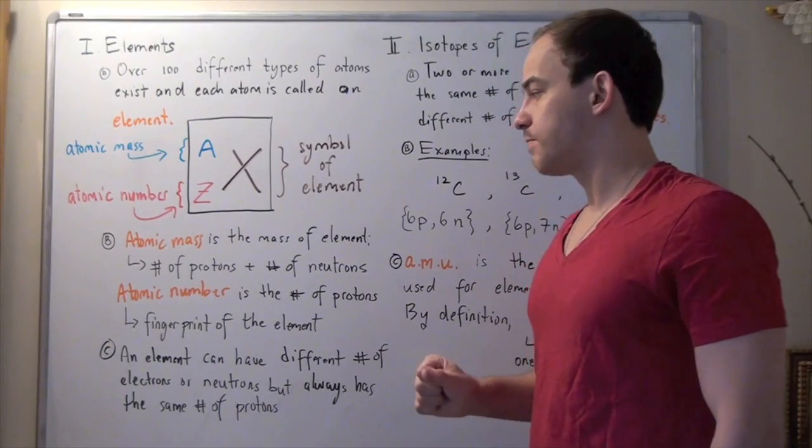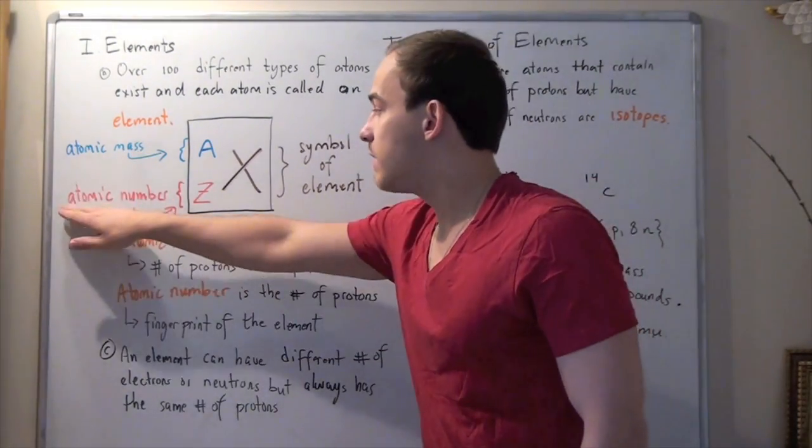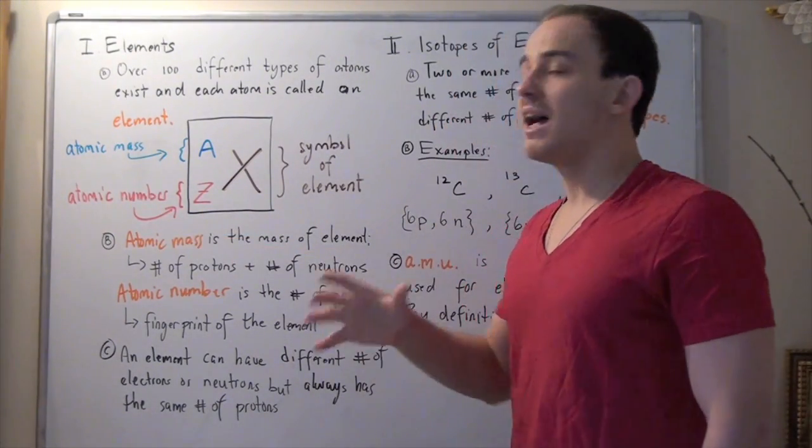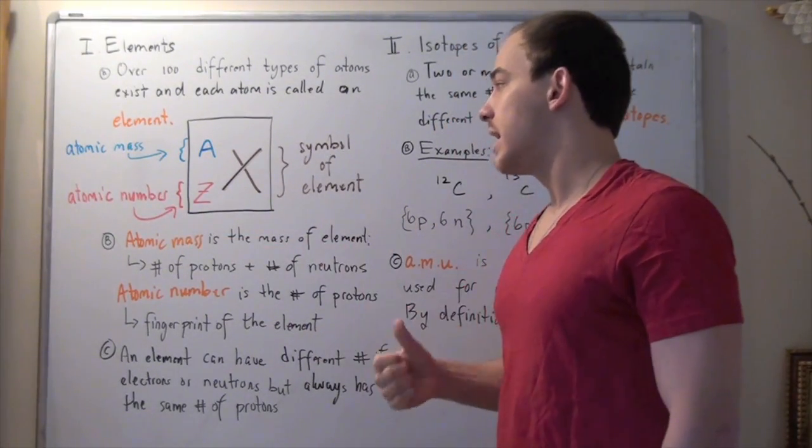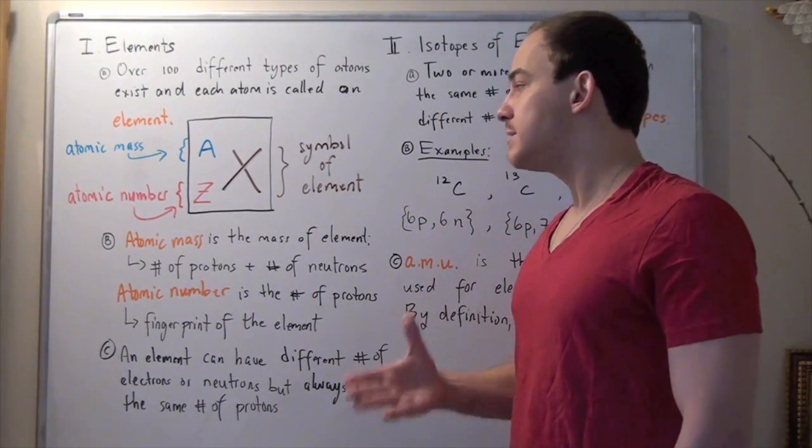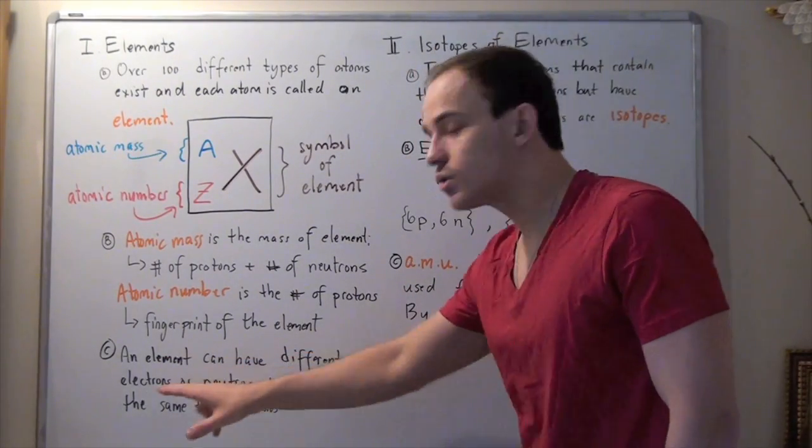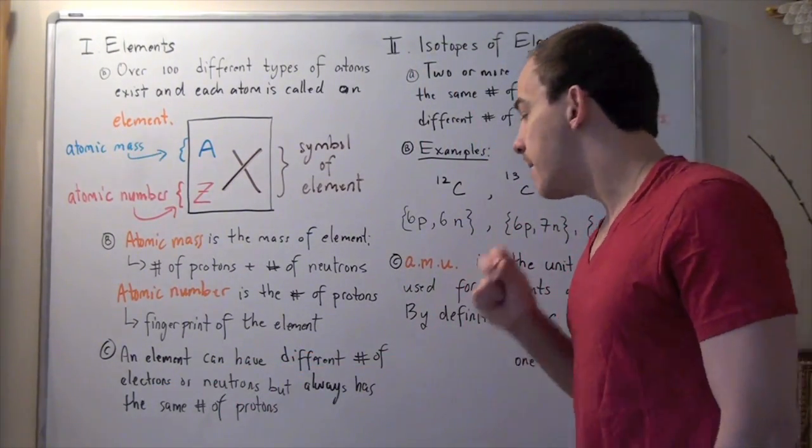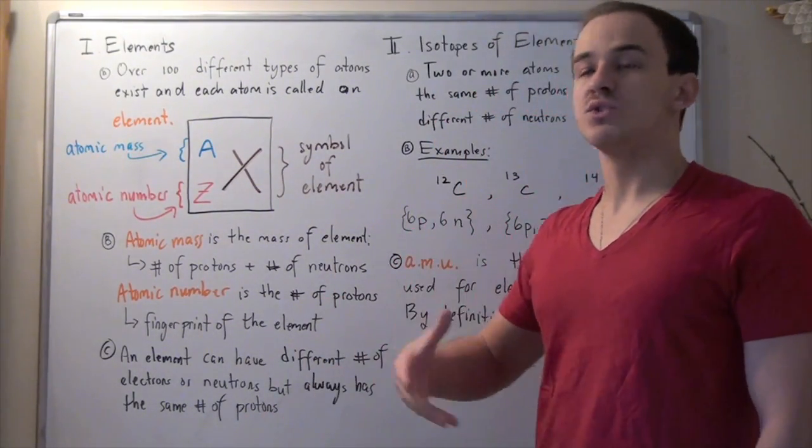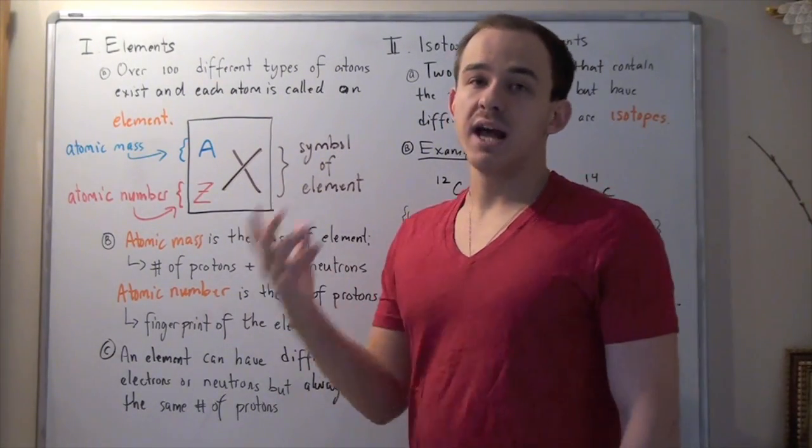The atomic number is the number of protons of our element. That number, the atomic number, is the identity number of that element. It's used to identify our element, the fingerprint of that element. That's because any element can have different number of electrons or neutrons, but it will always have the same number of protons. That's why you could use the atomic number to identify our element.